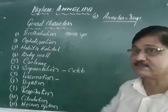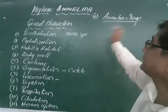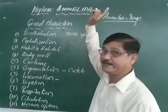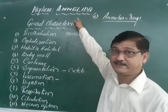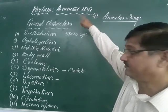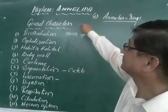The body is made by a large number of ring-like structures forming an elongated body. That is called Annelida — annelida means the body is made by annuli.